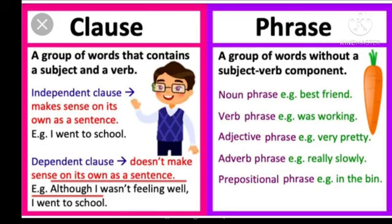For example, 'I went to school.' Here, 'I' is the subject and 'went' is the verb. But a phrase is a group of words without a subject-verb component. It is not required to have both a subject and verb, but it is still a part of a sentence. For example, in 'Rahul is my best friend,' the phrase is 'my best friend.' In 'Rahul was working,' the phrase is 'was working' — there we can see only the verb, there is no subject.